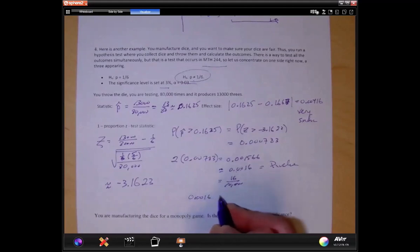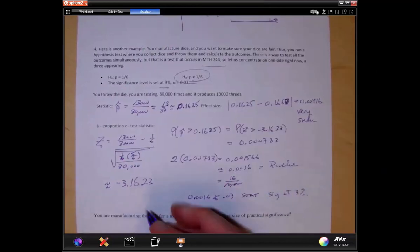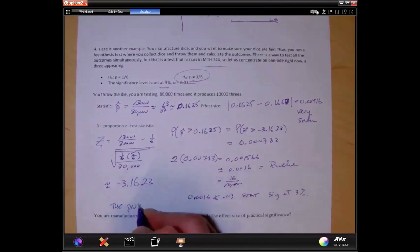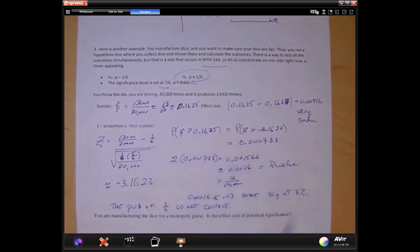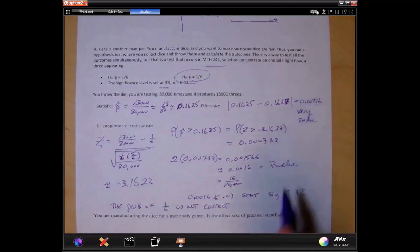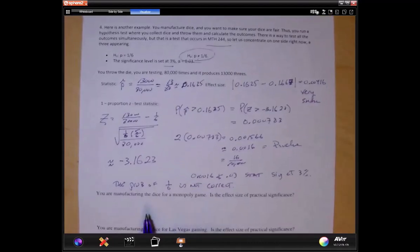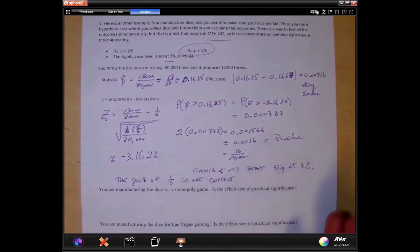Certainly it is significant at the 3% level. In other words, 0.0016 is less than 0.03. So statistically significant at 3%. And all this means is that the probability of 1/6 is not correct. That's the interpretation. It's not 1/6. And this is my effect size: 0.00416. So you're manufacturing the dice for a monopoly game. Is the effect size of practical significance?